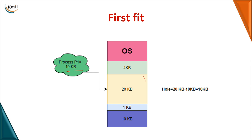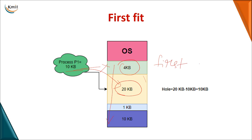In first fit, given a process of 10 KB, you search through memory and place the process in the first empty location where it fits. For example, a 4 KB free block is too small, but a 20 KB free block can accommodate 10 KB. You allocate there immediately without checking further alternatives, regardless of whether memory is wasted.